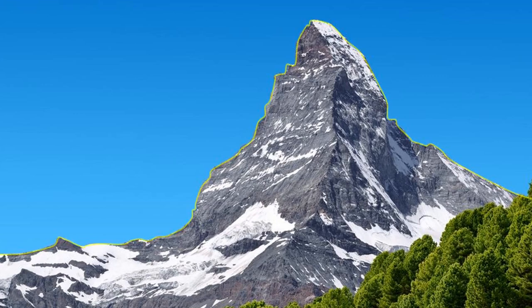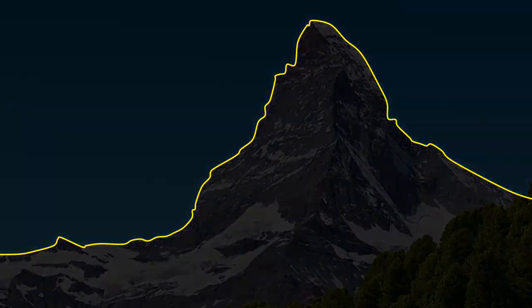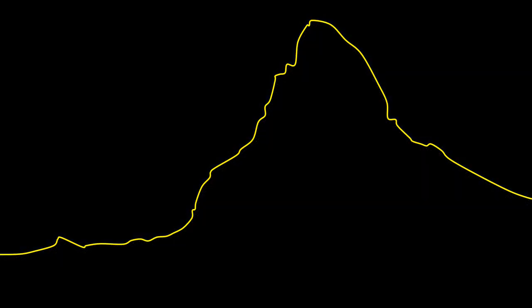We focus on the maximum height of the terrain, depicted in yellow. This boundary between mountain and sky is defining a curve, let's call it the Matterhorn function.